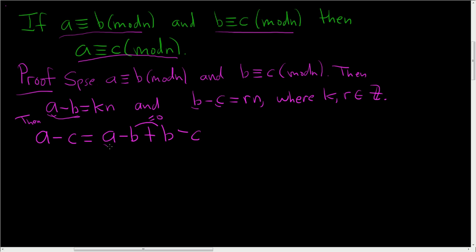And that's the beautiful thing, because this is equal to KN plus this, which is equal to RN. And then we'll factor out the N. So this is K plus R times N, where K plus R is indeed an integer.